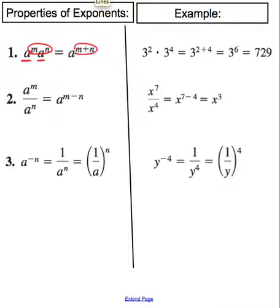So an example over here is three squared times three to the four. We add the two and the four together, which gives us six. And then three to the sixth power, you can use your calculator if you want to.